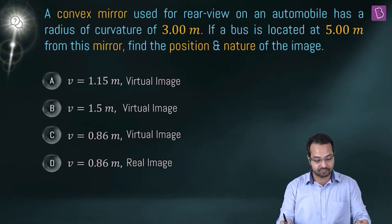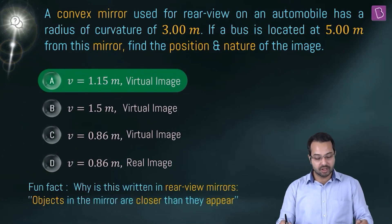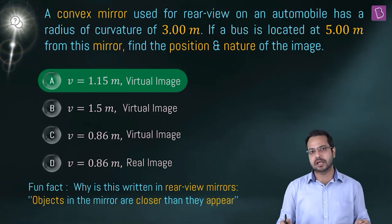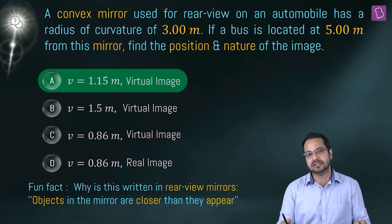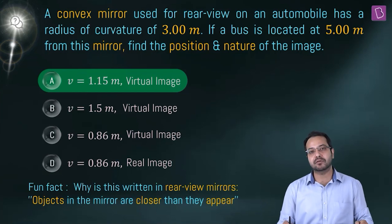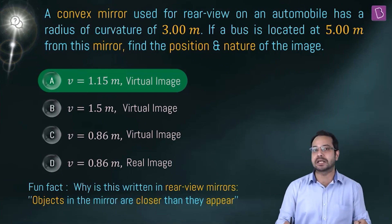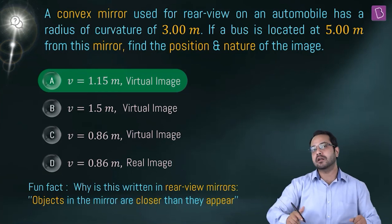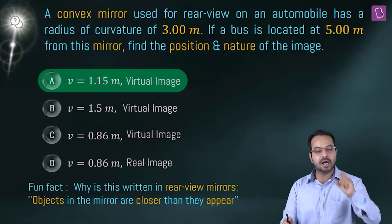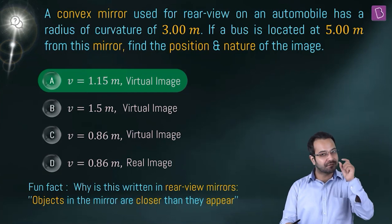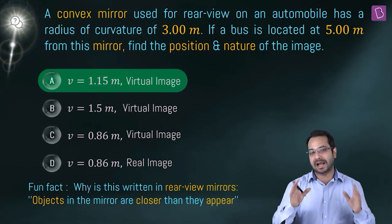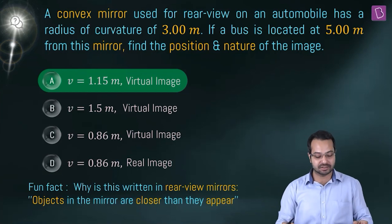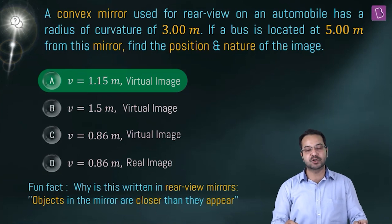Option A is correct. A fun fact: rear-view mirrors say 'objects are closer than they appear' because the convex mirror produces diminished images, giving a larger field of view. The smaller image makes objects appear farther away than they actually are, so drivers must be cautious.